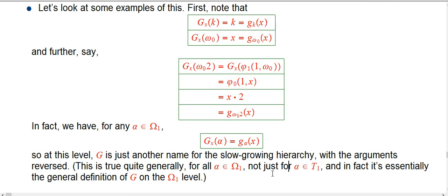In fact, this is a place where it's not hard at all to talk about the general definition of Gx. For any alpha in omega 1, it turns out that this is the definition, basically, of the big G function. So at the countable ordinal level, it really is exactly the slow growing hierarchy.